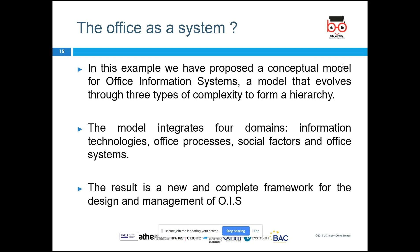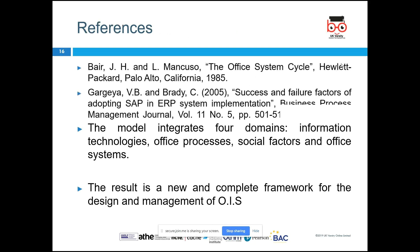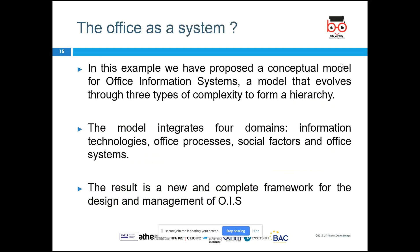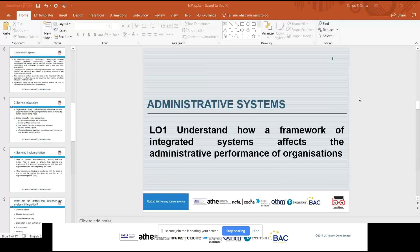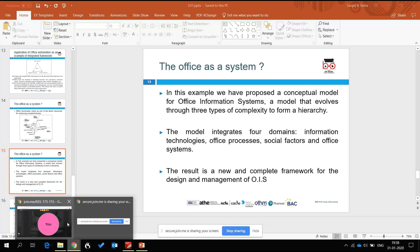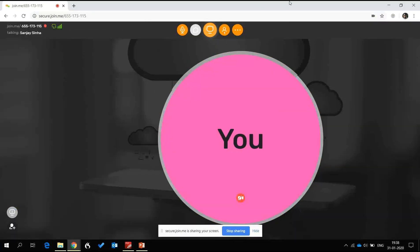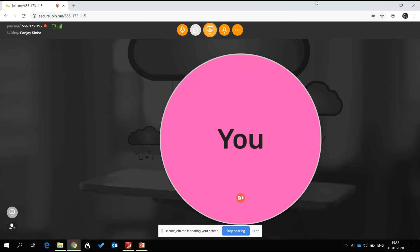The office automation system is a complex system, but once developed, it can meet the requirements of the business. It integrates four main domains: information technology, office processes, social factors, and office systems. A confluence of all these factors is what makes it successful. In case you have any questions, you can email me and I will be very happy to support you.